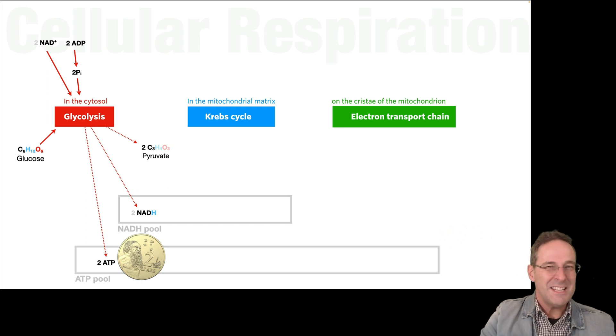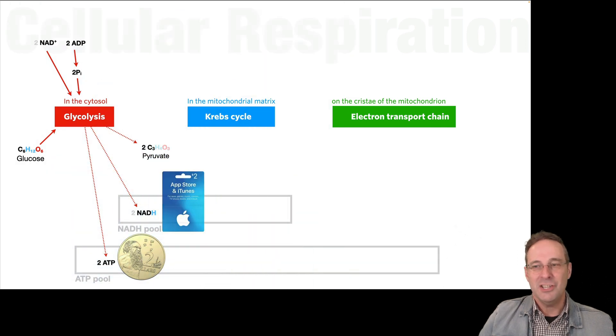Now if ATP is energy money, NADH is more like an energy gift card. It has value, but you can't just spend it anywhere. If you've got an iTunes gift card, you can't buy petrol with it. You can't buy groceries with it. You can spend it in the Apple store or a few other select places, but that's all. And that's very much like what NADH is like. It can be spent in the electron transport chain and a few other select places, a few other select processes in a cell, but it can't be used for active transport or protein synthesis or other energy requiring processes the way that ATP can.